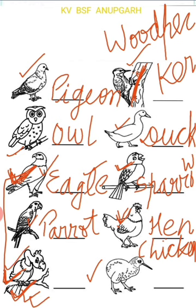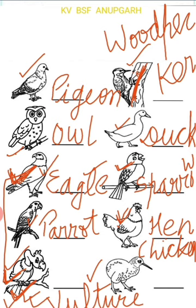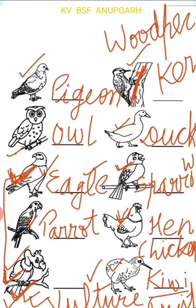Come on this picture. As I said, this is vulture. V-U-L-T-U-R-E. Vulture. Our last bird — the spelling of kiwi is K-I-W-I. Kiwi.